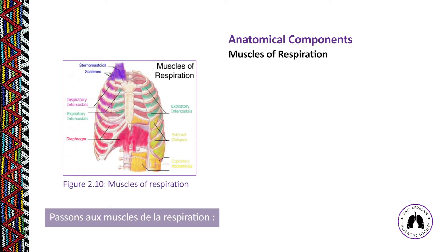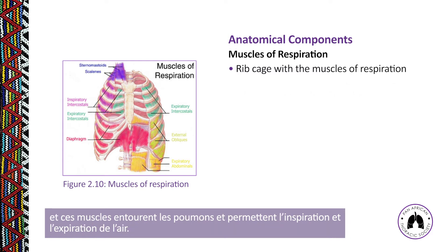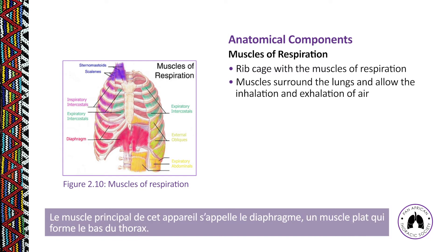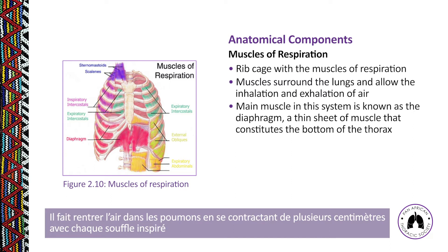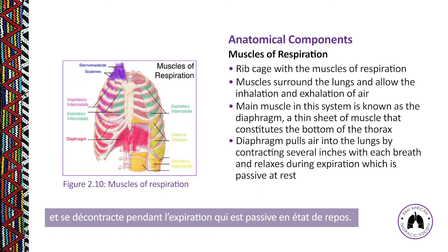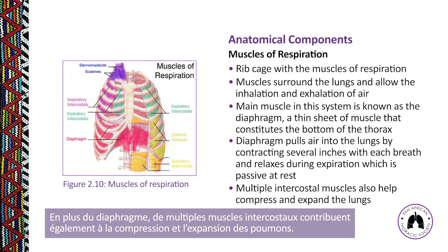Looking at the muscles of respiration — the last component of the respiratory system is the ribcage, with muscles collectively called the muscles of respiration. These surround the lungs and allow for inhalation and exhalation. The main muscle is the diaphragm, a thin sheet of muscle constituting the bottom of the thorax. It pulls air into the lungs by contracting with each breath and relaxes during expiration, which is passive at rest. Multiple intercostal muscles between the ribs also help compress and expand the lungs.